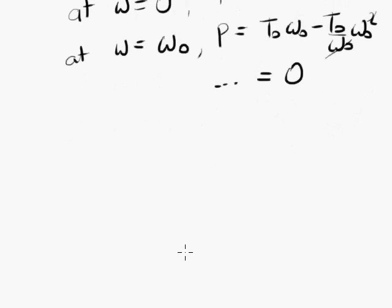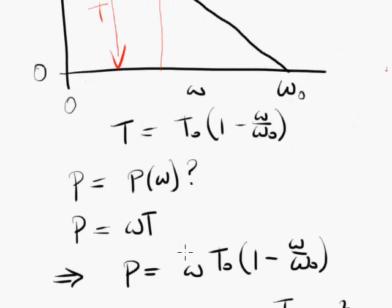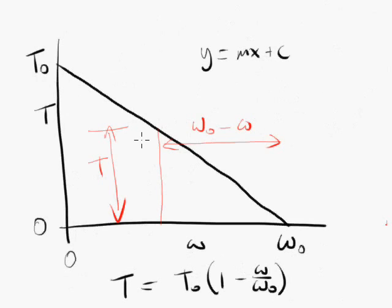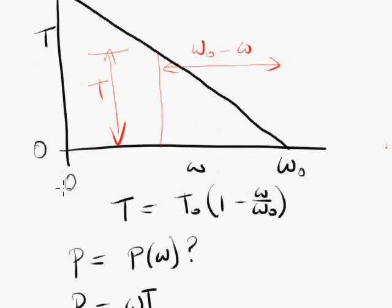So that makes sense. Let's go back to our graph. We're saying that the power is 0 when the speed of the motor is 0. And that makes sense, because there's no speed, there's no power. It's also saying that the power is 0 when the speed is equal to omega 0, a maximum. And that makes sense, because at maximum speed, there is no torque. And with no torque, there can be no power.